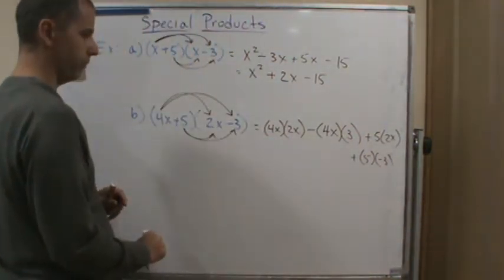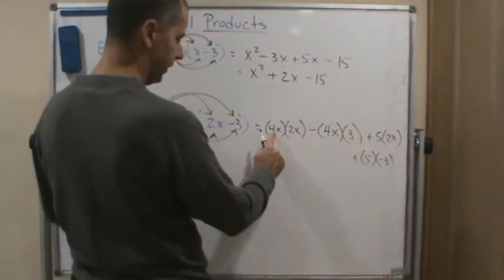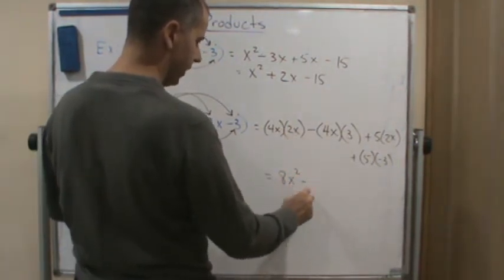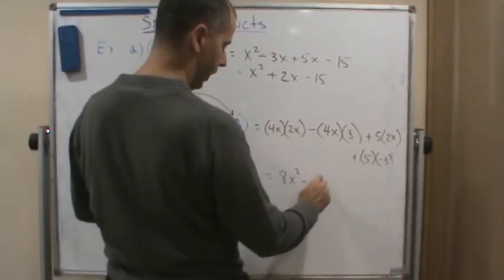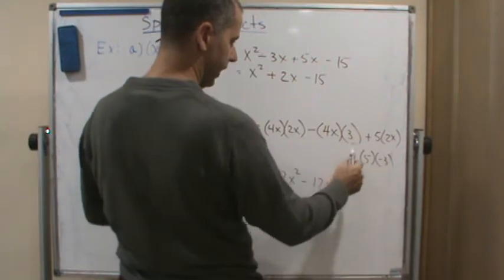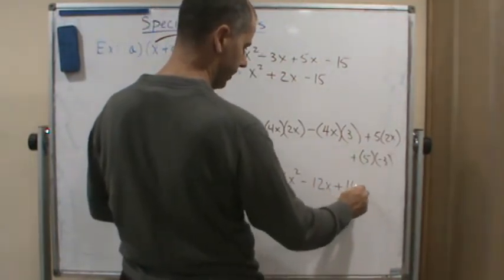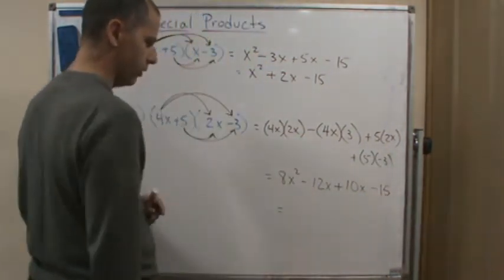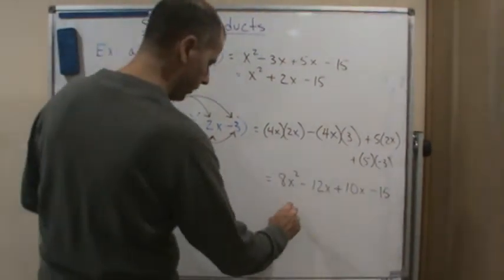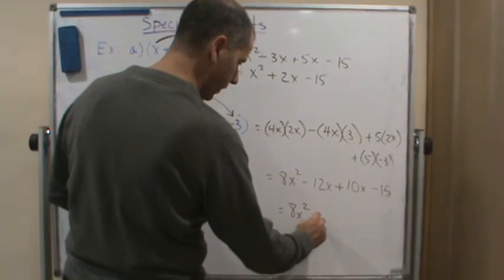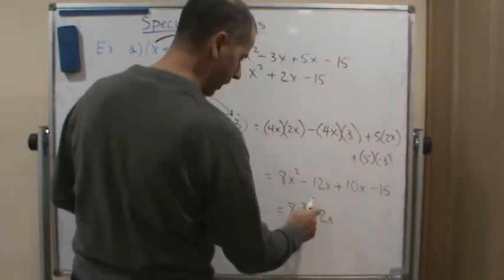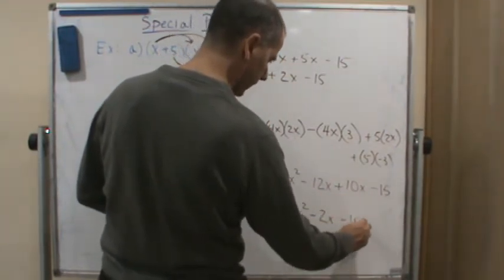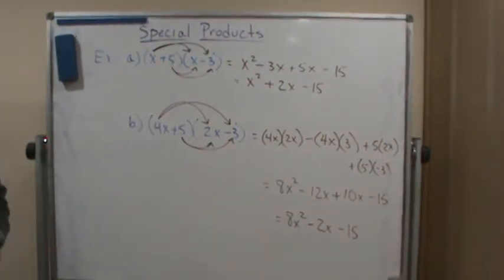Now we simplify: two times four is eight, x times x is x squared, minus four times three is twelve, giving us negative twelve x. Then five times two is ten x, and minus fifteen. Combining like terms: eight x squared, then negative twelve x plus ten x gives us negative two x, minus fifteen. That's our final answer.